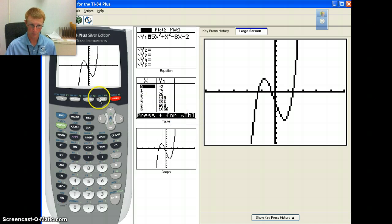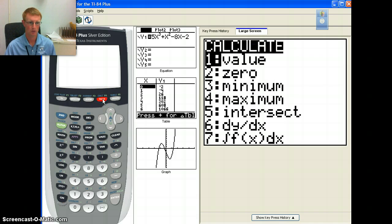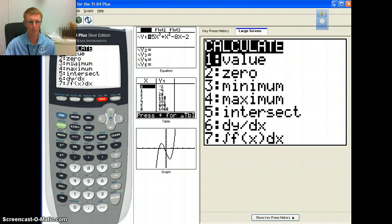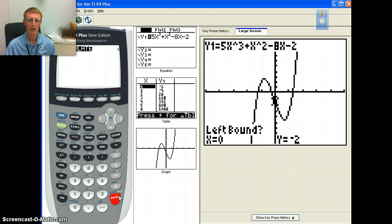So that was step three. Step four, this is the most important part. We are not tracing. You never want to guess what your zero is. What you want to do is you want to go to second and calc. So you see that little calc right there or second trace. And there's the second option on there is zero. That's going to help us find a zero. So you either hit the number two or just click enter once you scroll down to it.